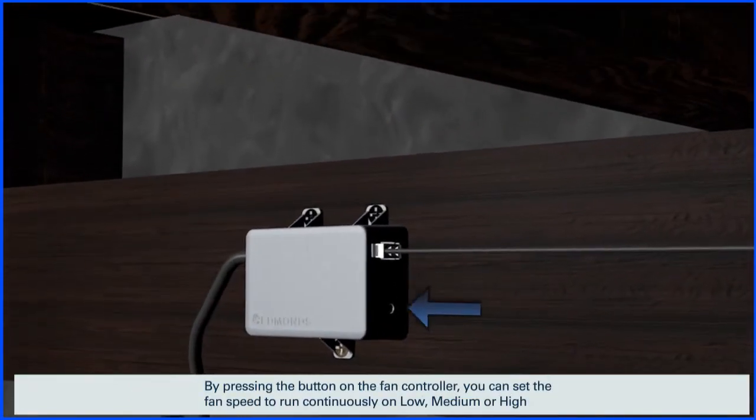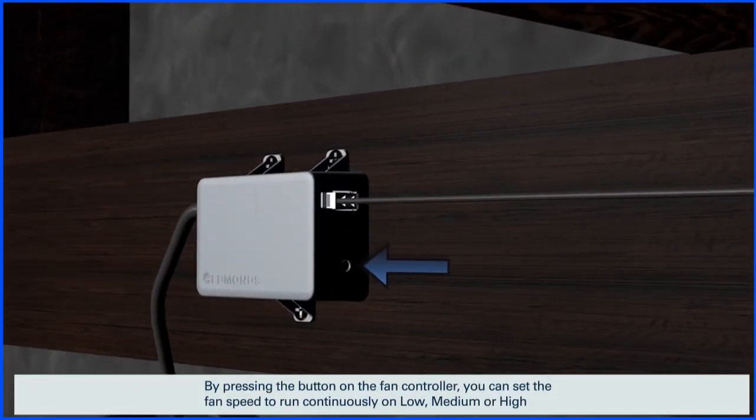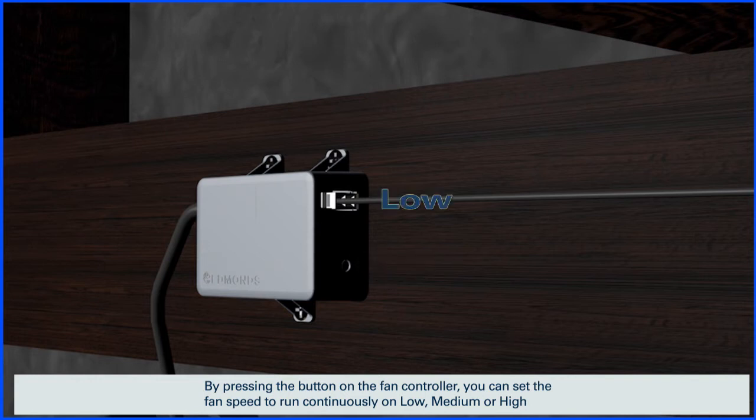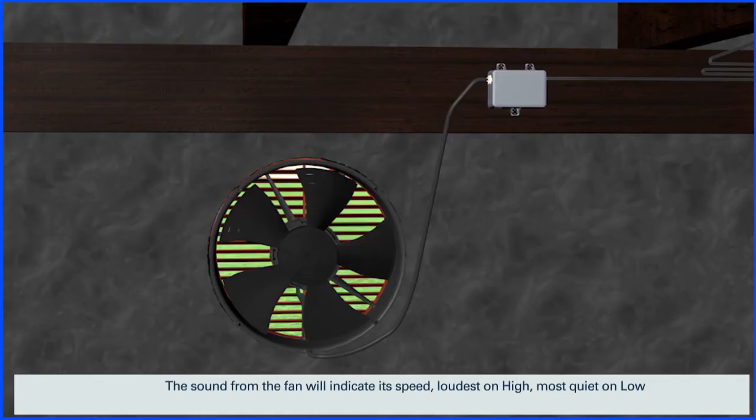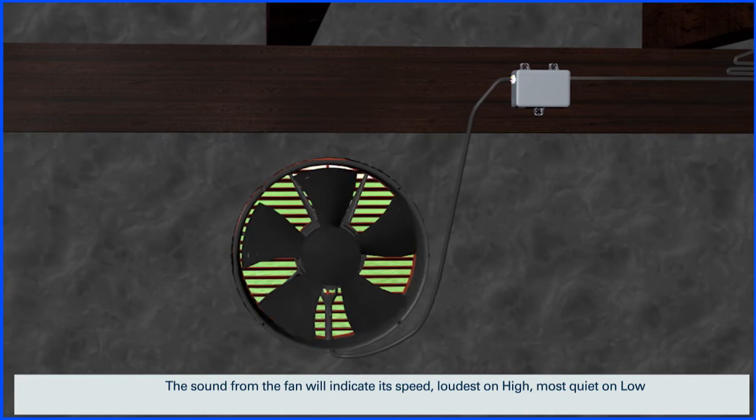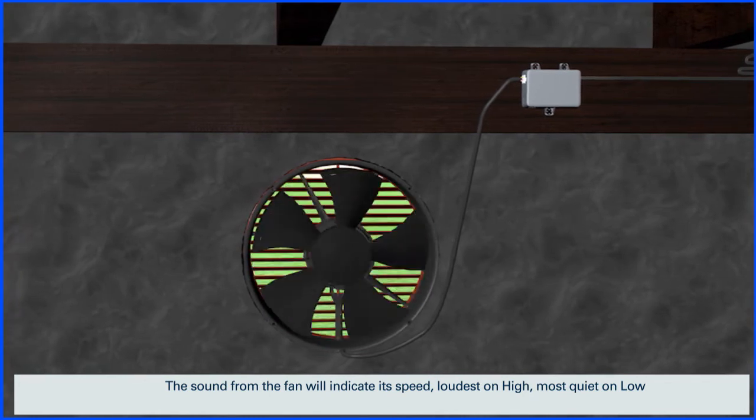By pressing the button on the fan controller, you can set the fan speed to run continuously on low, medium or high. The sound from the fan will indicate its speed, loudest on high, most quiet on low.